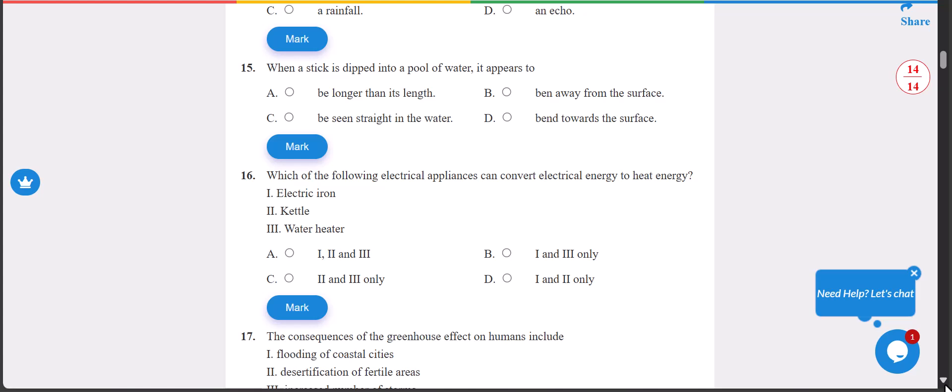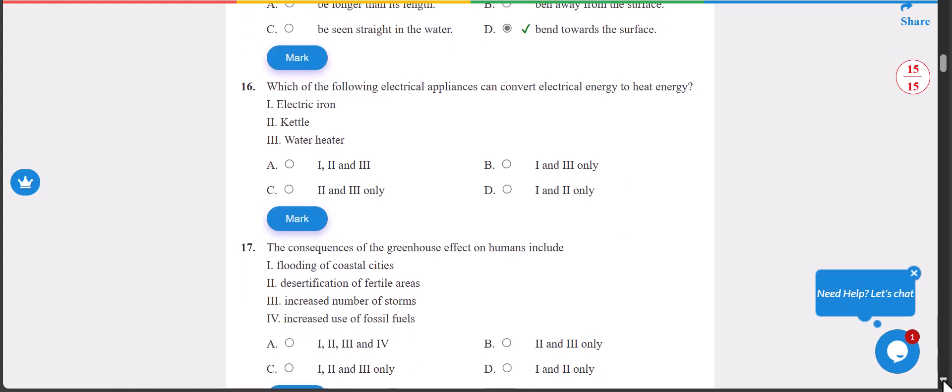Number 15: when a stick is dipped into a pool of water it appears as what? The answer is D, bend towards the surface. You can try that - if you put a stick into the water, you see it as if it has bent down.